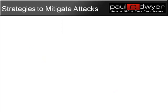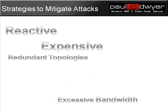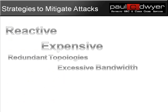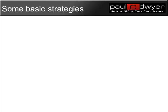Let's look at some strategies to mitigate attacks. Generally, these types of mitigations tend to be reactive and very expensive. They range from redundant topologies to excessive bandwidth, load balancing, layer 7 switching, and even content delivery networks. But let's look at some of the more basic things we can do in order to mitigate the risk of a DDoS attack.